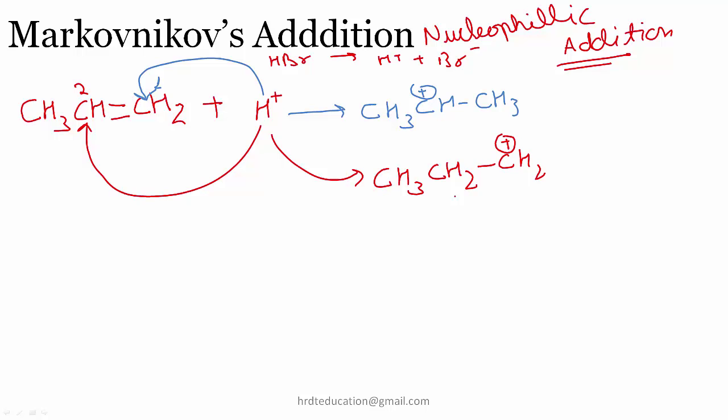Now there are two carbocations formed. One is secondary and the other is primary. Now we know secondary carbocation is more stable than the primary one, and that is why the secondary carbocation is formed and not the primary.